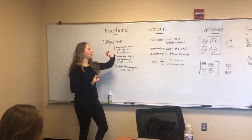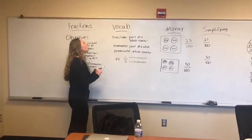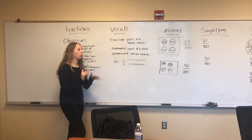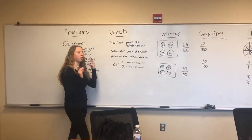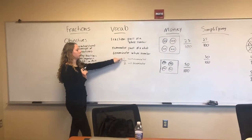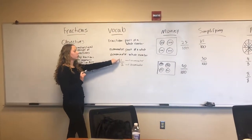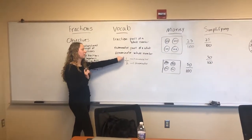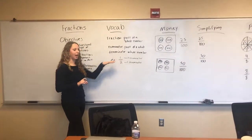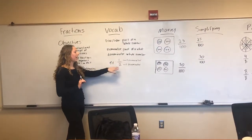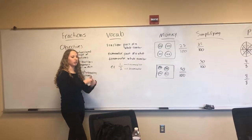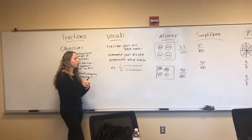So moving on to the basic vocab of a fraction. A fraction represents a part of a whole number. There are three main parts of a fraction. The first part is the numerator — that's the top number of the fraction and it represents the part of a whole. Then we have the dividing line in between, and then we have the denominator, which is the bottom number that represents the whole number we're talking about.